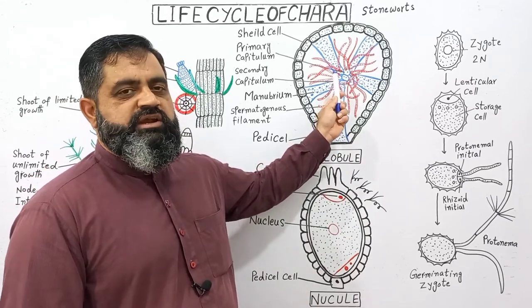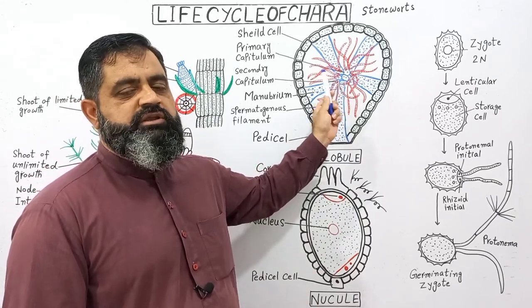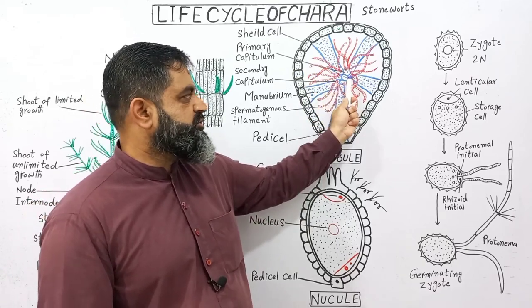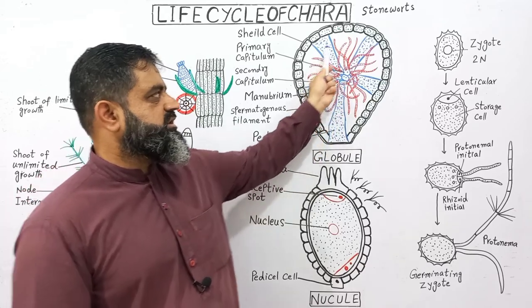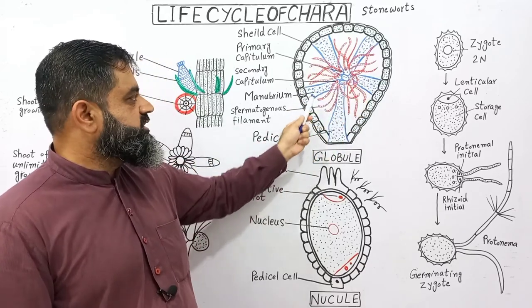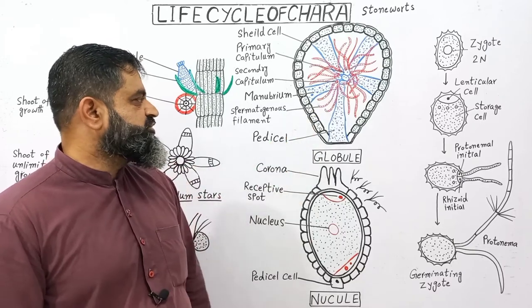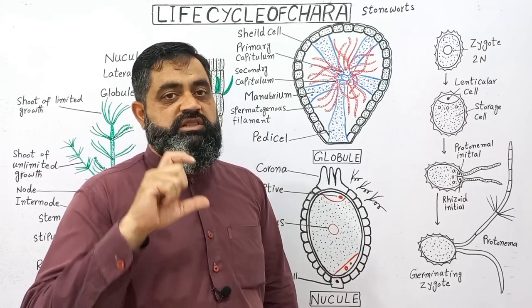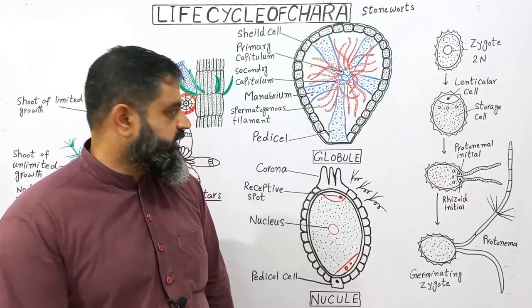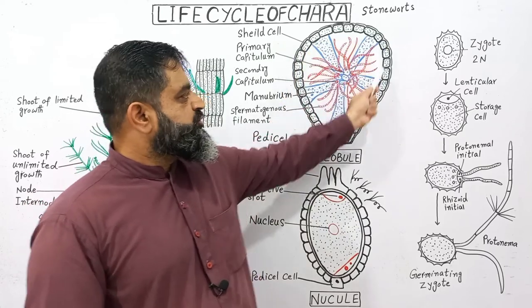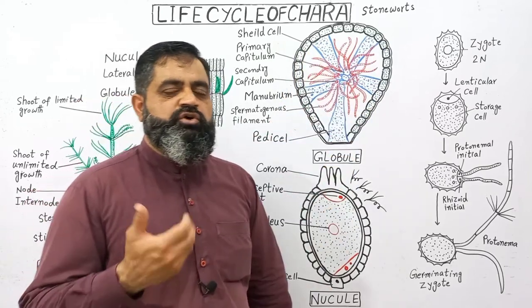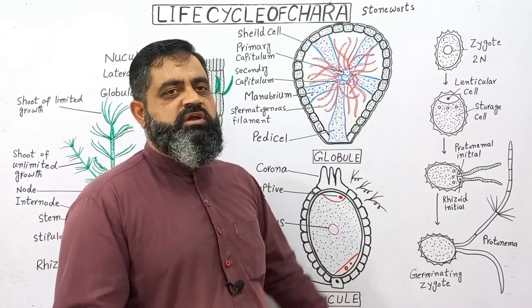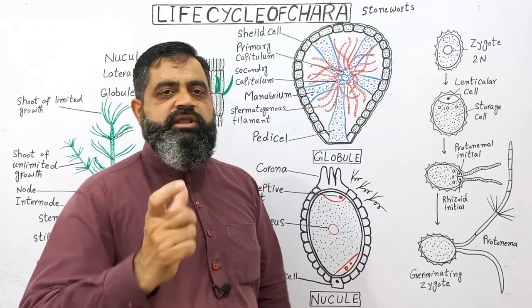From the primary capitula, secondary capitula are produced, and from the secondary capitula, tertiary capitula are produced. Sometimes from the secondary capitula there arise thread-like structures known as spermatogenous filaments. These spermatogenous filaments are going to produce antherozoids, which are the male gametes. When the globule matures it produces thousands of antherozoids, which are released into the water through a small tiny pore on the top of the globule.